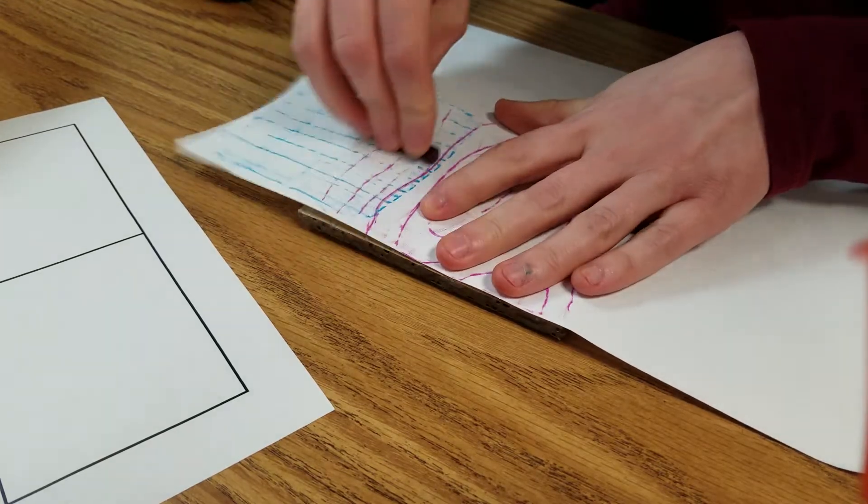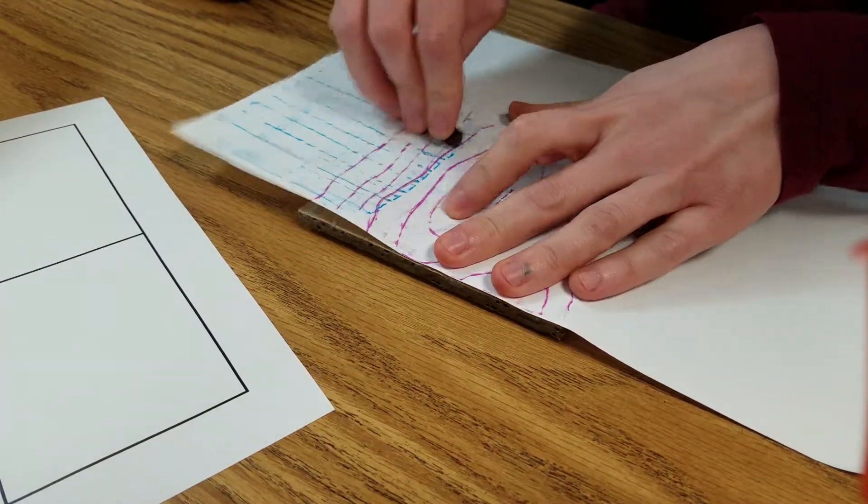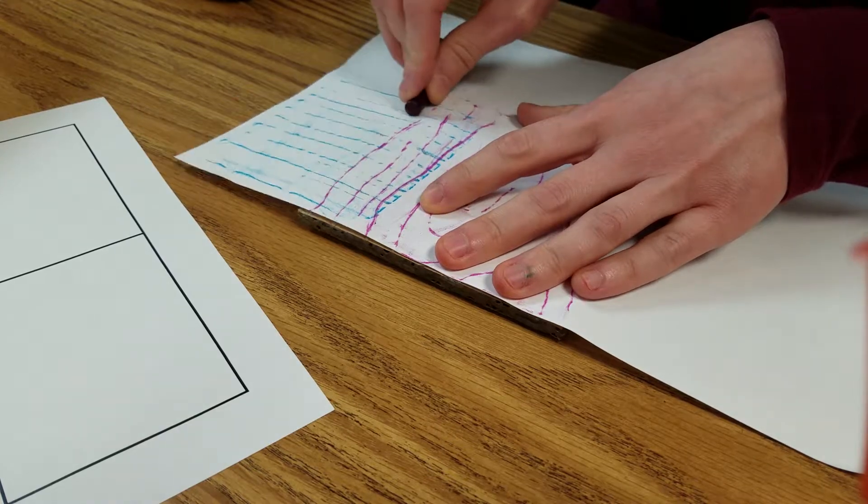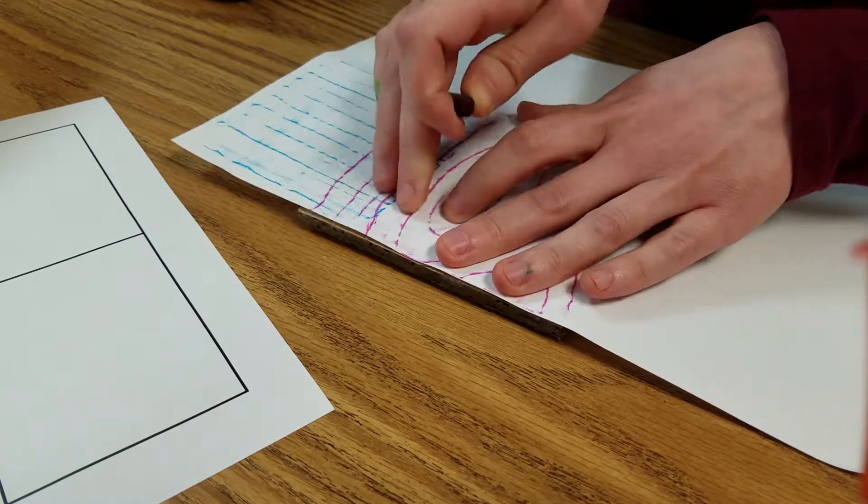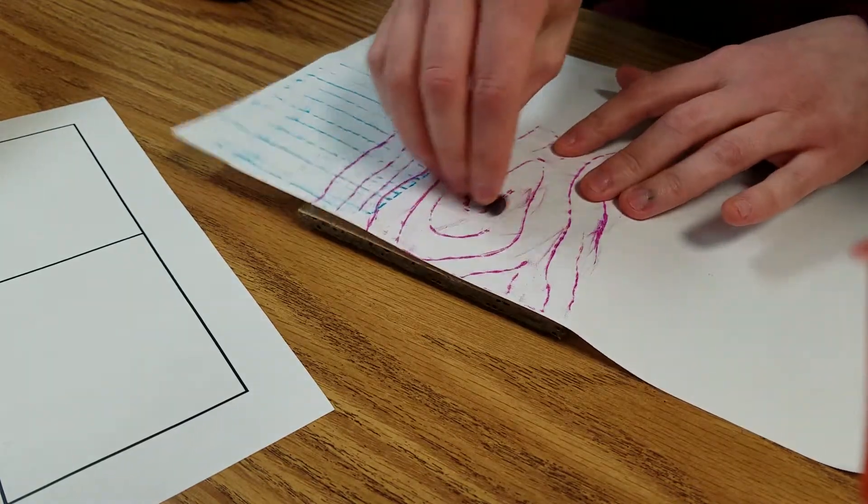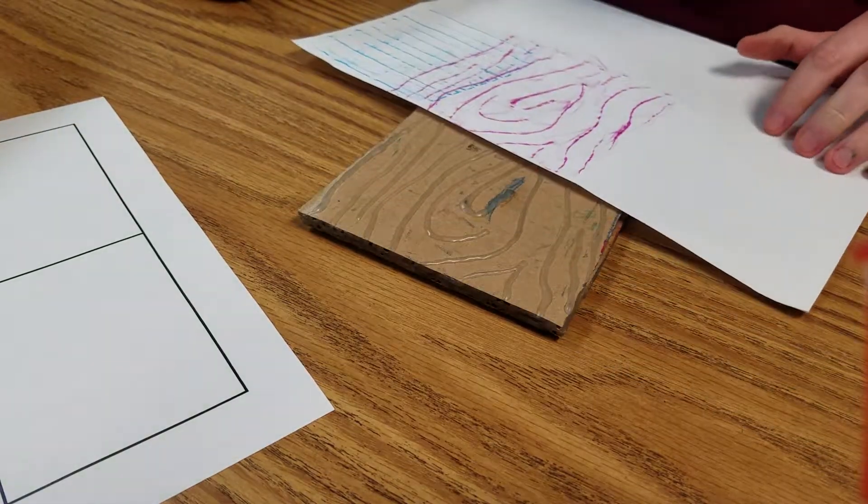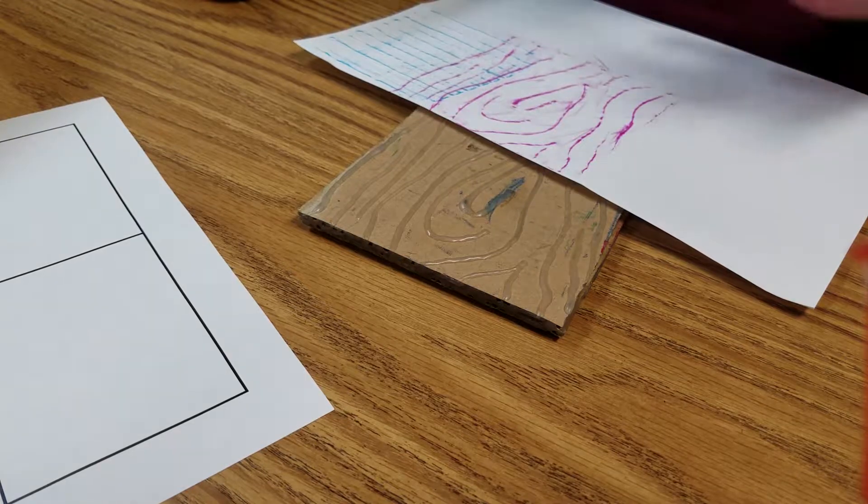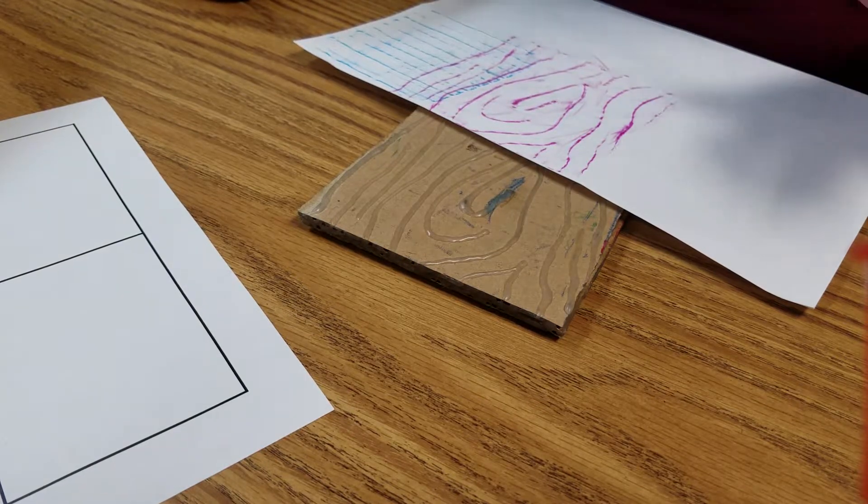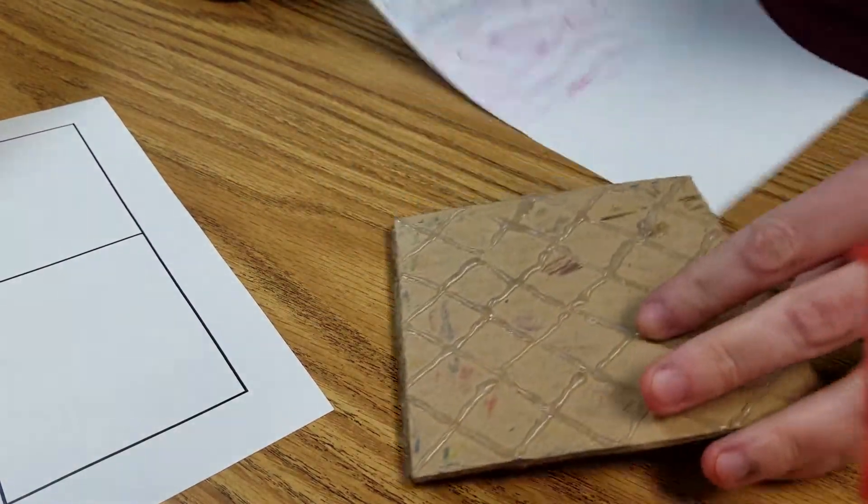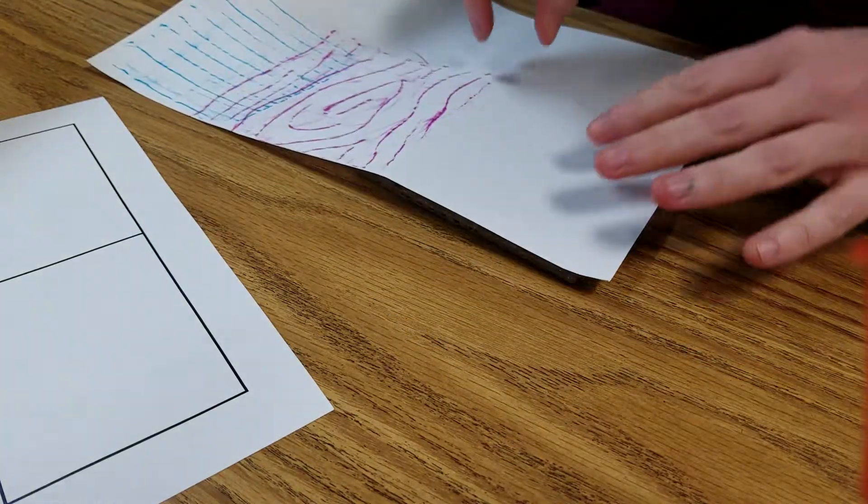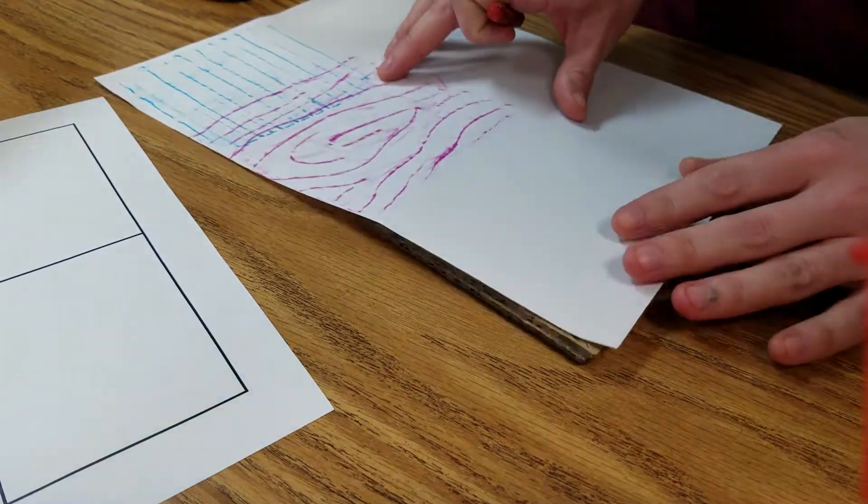You can also layer your different textures. You can color on top of one you've already done. You're going to fill your entire page. You don't want to leave empty spots because that's boring. Get another crayon. I can flip this over and do the other side, and then I can color this corner too.